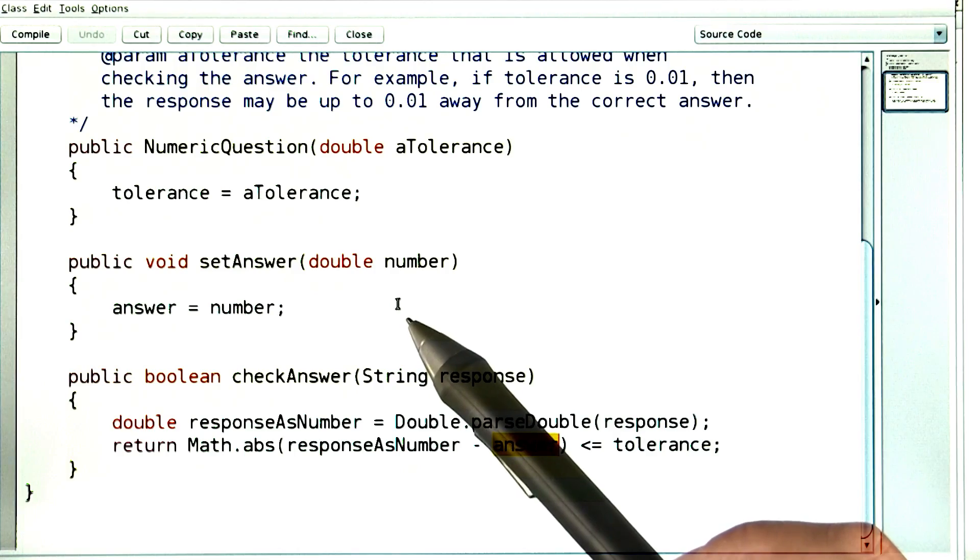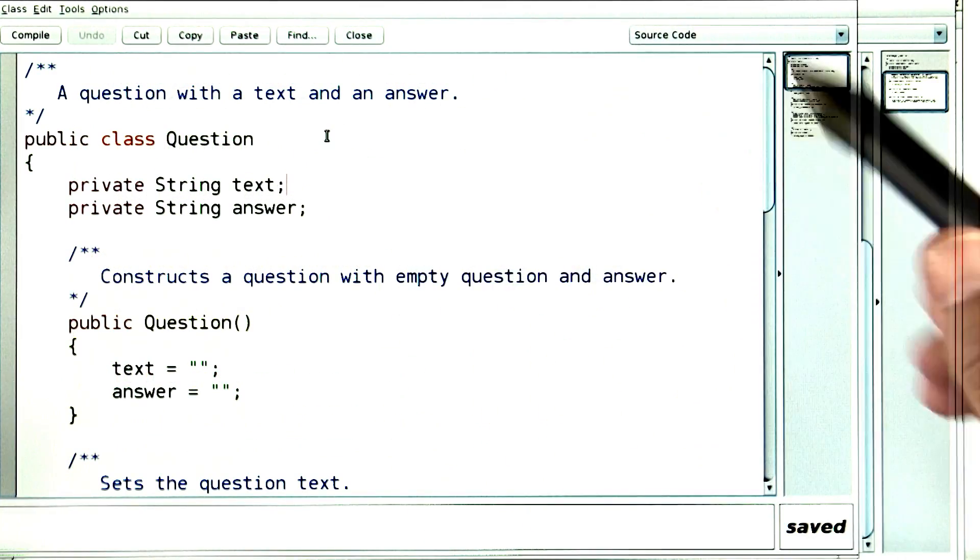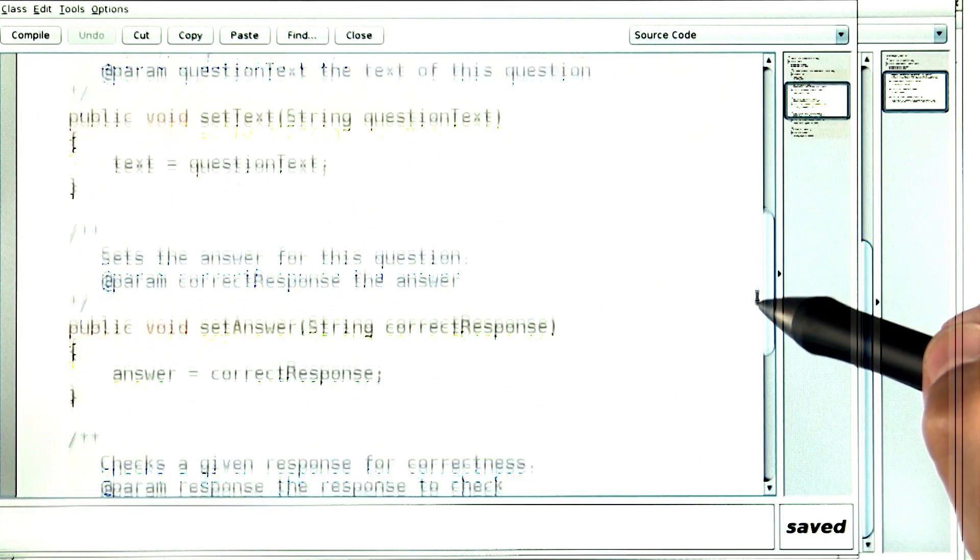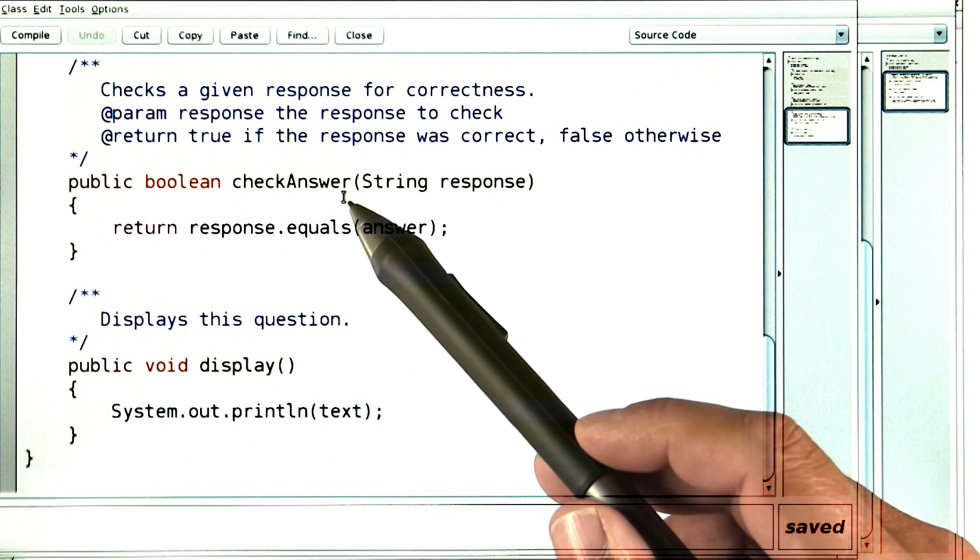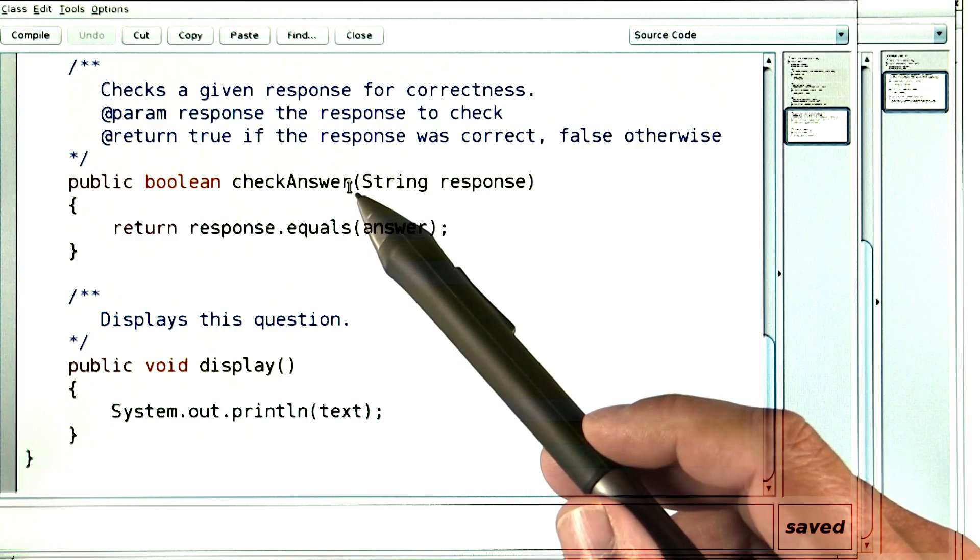Except, when I tried that, that didn't work, because the question class has no way of giving me back the answer. It's used inside its own check answer method, but that one is worthless to me, because it doesn't take the tolerance into account.